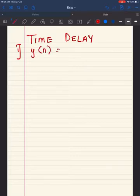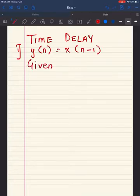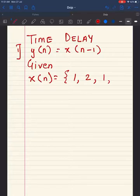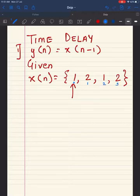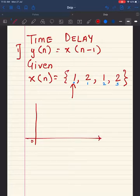Consider y[n] = x[n - 1], given that x[n] is a signal with values 1, 2, 1, 2. The arrow indicates the origin, meaning at n=0 the value is 1, at n=1 the value is 2, at n=2 the value is 1, and at n=3 the value is 2.